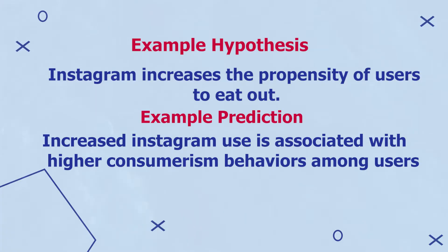Having drawn up my hypothesis, I'm ready to move to the fourth step of the research process, which is generating predictions. After drawing up my hypothesis that Instagram increases the propensity of users to eat out, I can then make a prediction that increased Instagram use is associated with higher consumerism behaviors among users. My efforts in the next steps of research will be focused on collecting data that will help me test my prediction and either approve or disapprove such predictions.